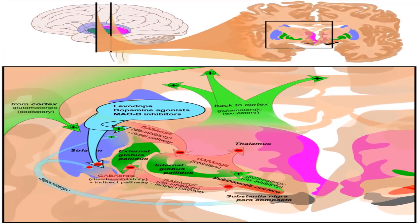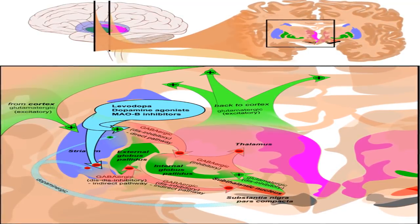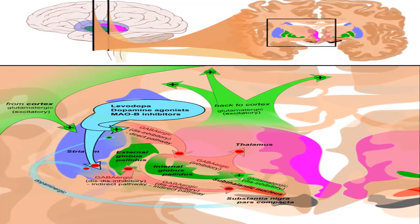Deep vein thrombosis occurs when a blood clot forms in your abdominal veins, triggering a stroke or mini-stroke. A pulmonary embolism occurs when a blood clot forms in your lungs.